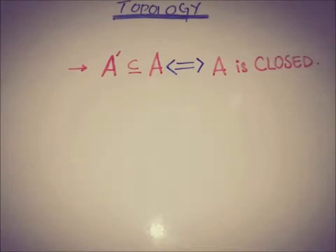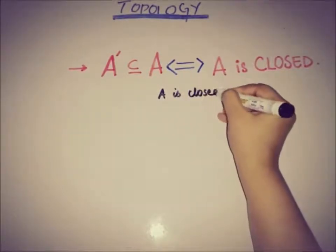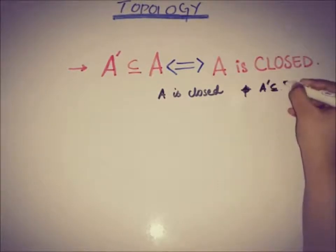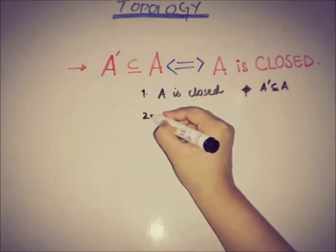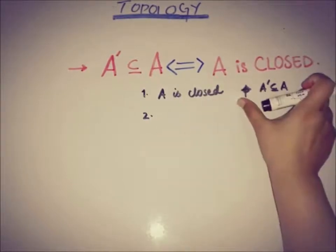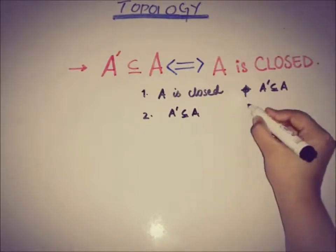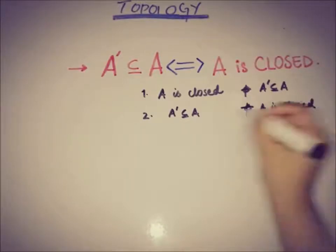There are two directions to this theorem — the first is necessity and the second is sufficiency. It is an if-and-only-if theorem. From the first point of view, we have to prove: if A is closed, then our target is A' ⊆ A. And for the second direction, if it is given that A' ⊆ A, then we have to prove that A is a closed set.